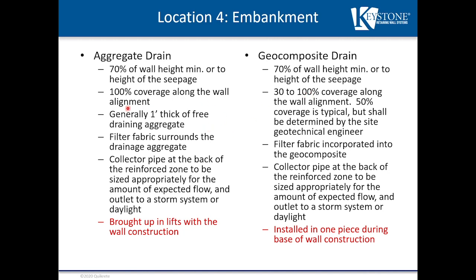The free-draining aggregate for the chimney drain is similar to #67 or #57 stone, surrounded by filter fabric. In the geocomposite, the filter fabric is incorporated into the product itself. Both systems require a collector pipe. Key differences are in installation technique and material cost: the aggregate drain is built up in lifts as the wall rises, while the geocomposite is installed in one piece, with careful backfilling to protect it.